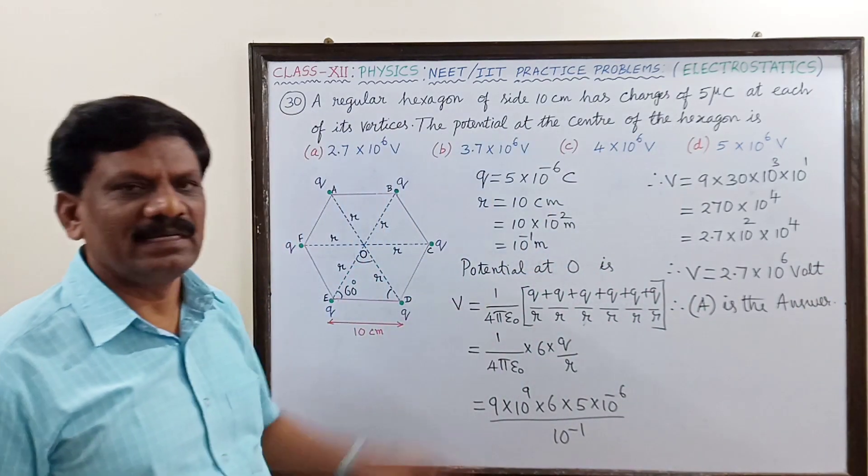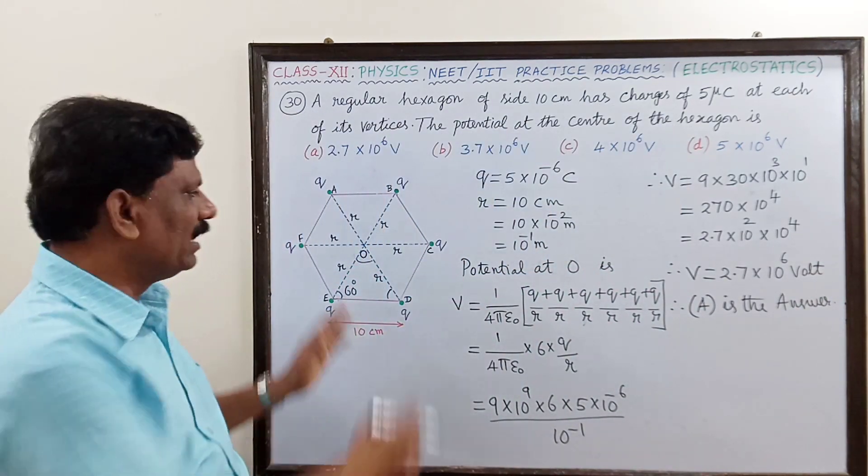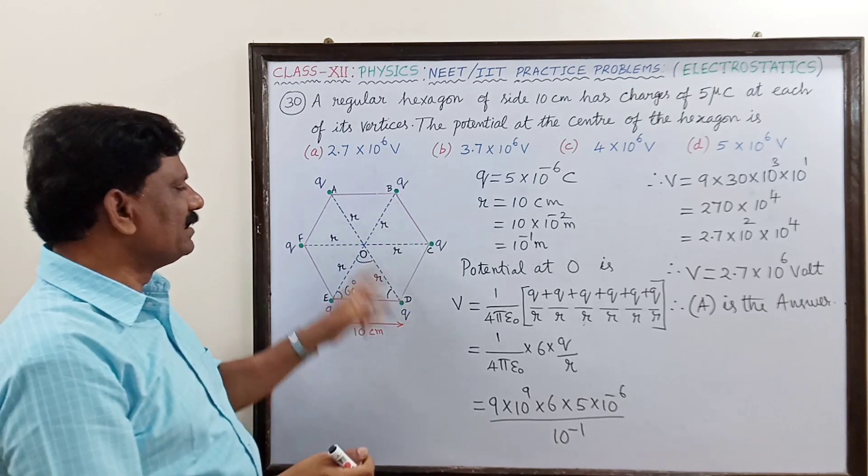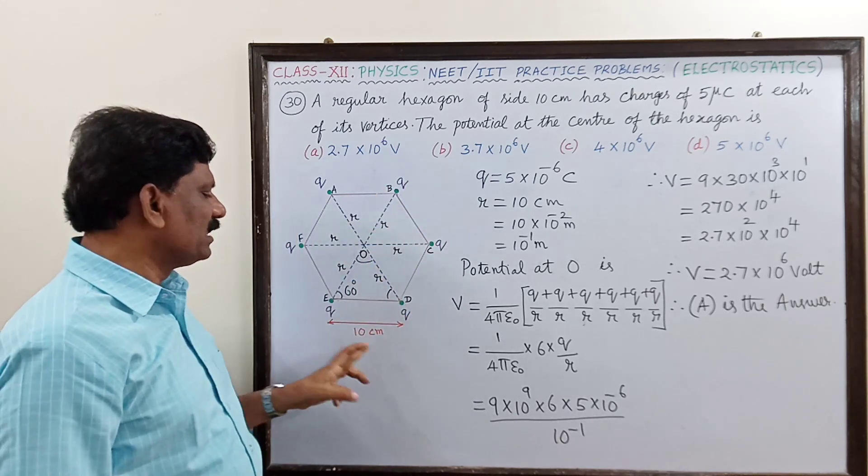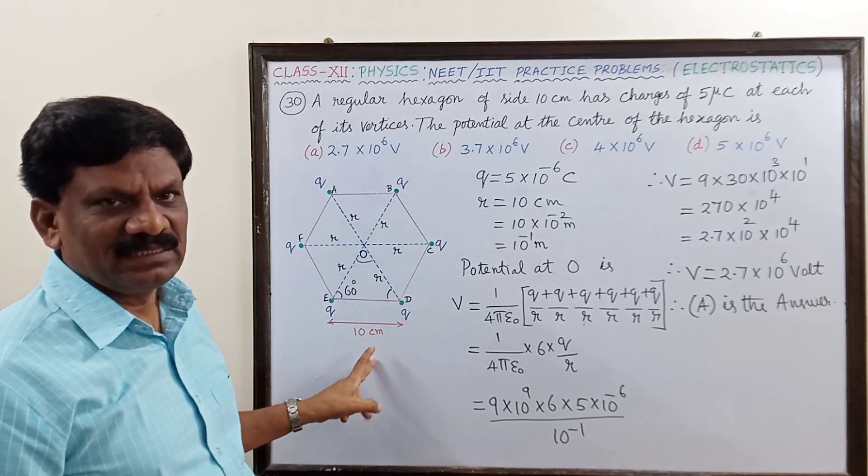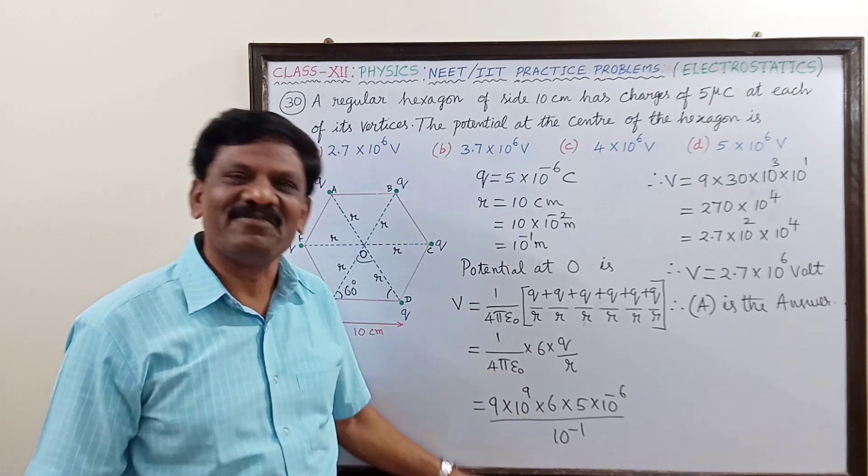This is actually very simple. Just you have to understand that the distance from the center to every charge is equal to the side of the hexagon. I hope you must have understood well.